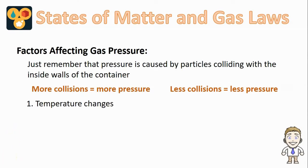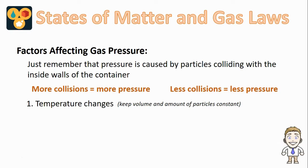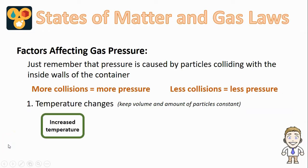The first factor we'll look at that can affect gas pressure is temperature changes. When we look at temperature changes, we're going to keep all other variables constant so we can isolate the effect temperature has. Things like volume and the amount of particles stay the same. What if we increased the temperature on the gas — made the gas warmer?